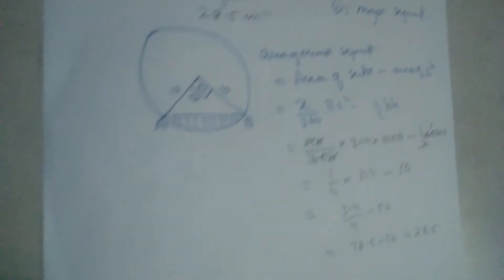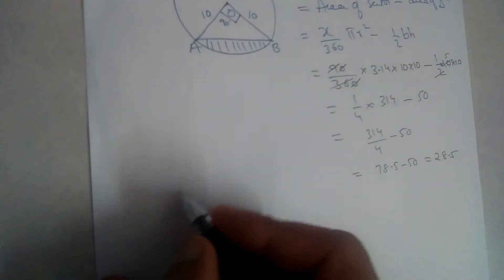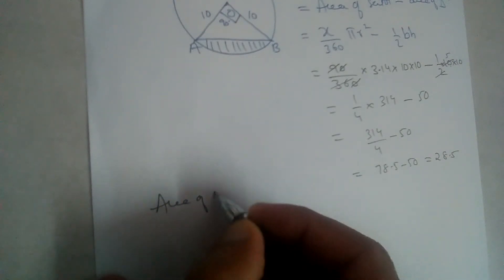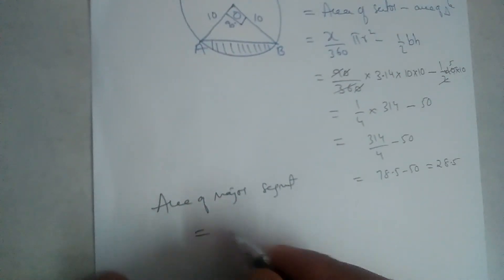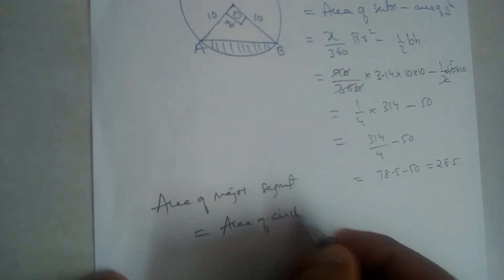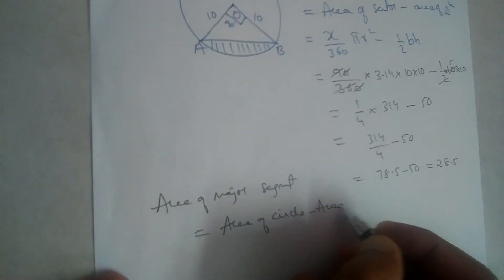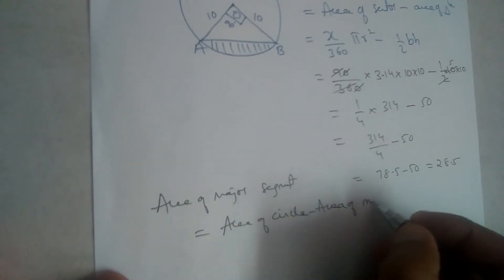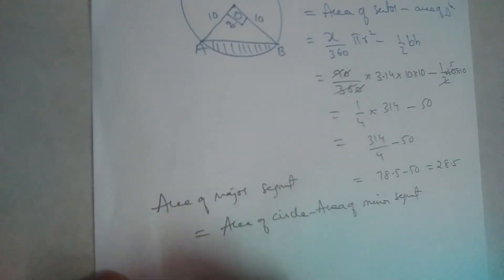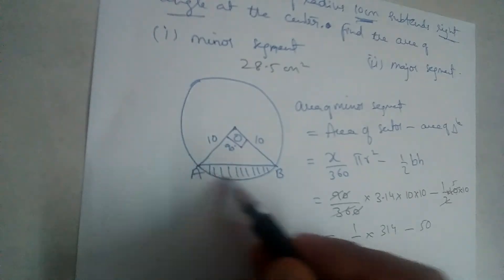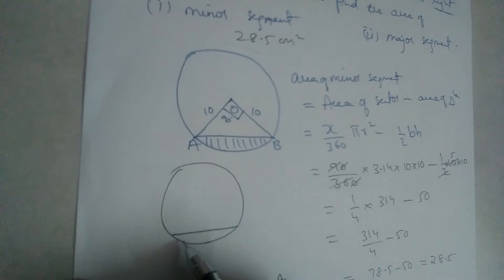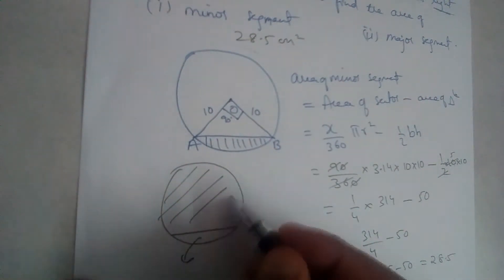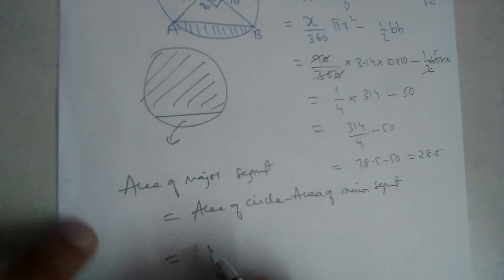Now how should we find area of major segment? Area of major segment is equal to area of circle minus area of minor segment. See, area of this circle and minus this part. If we subtract this part we will get area of major segment only.